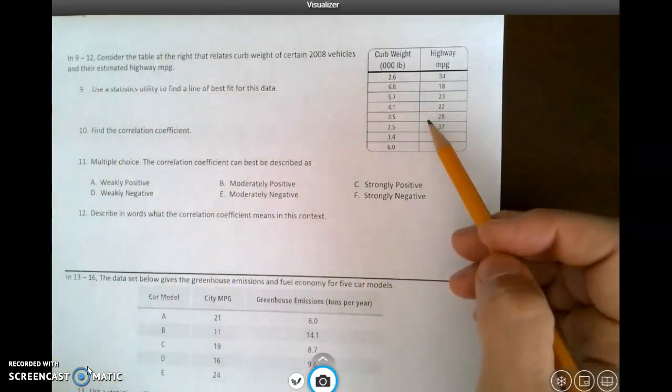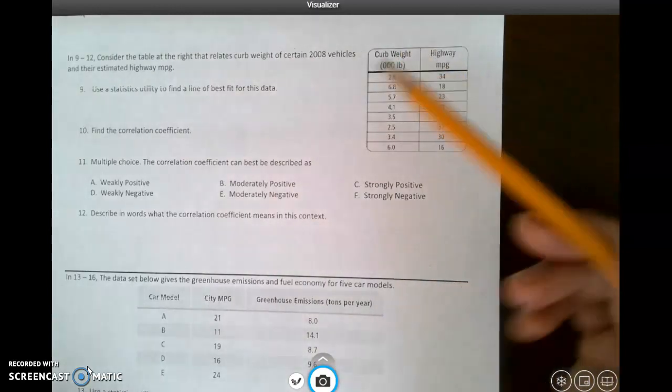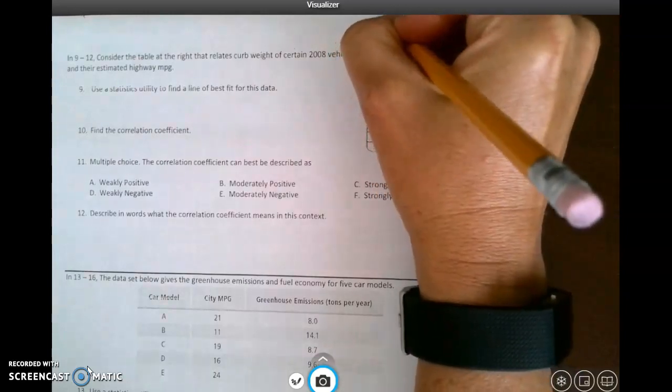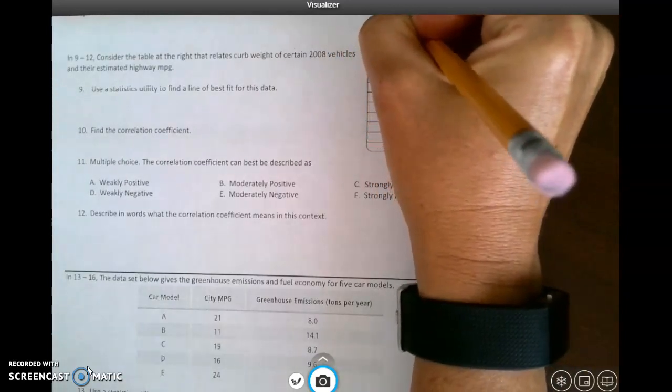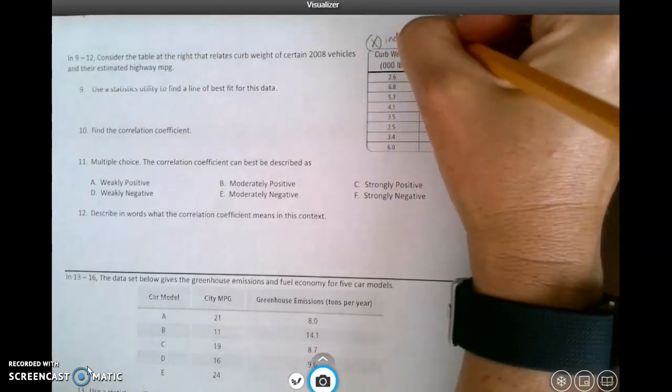So here's my data, and we're assuming that the weight of the car comes first. So this is going to be my X, which is my independent. This is going to be my Y, which is my dependent.